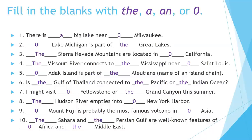The Hudson River empties into New York Harbor. Mount Fuji is probably the most famous volcano in Asia. The Sahara and the Persian Gulf are well-known features of Africa and the Middle East.